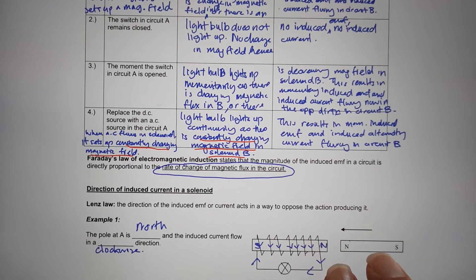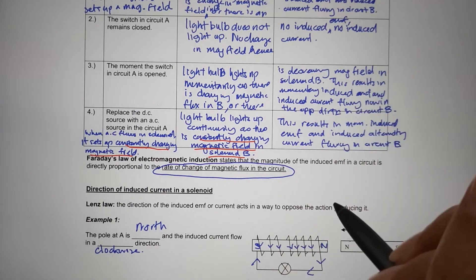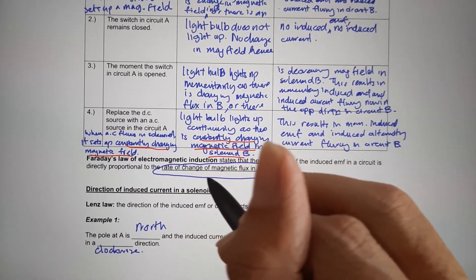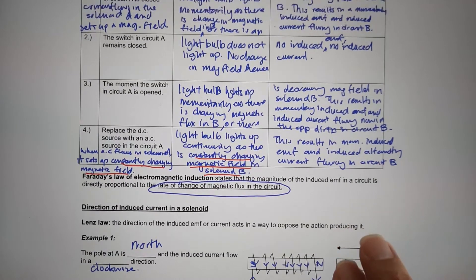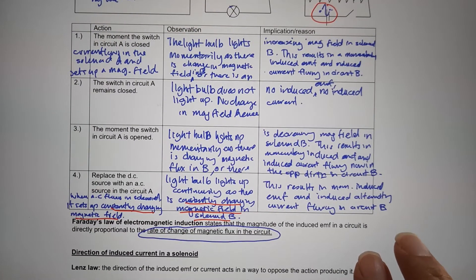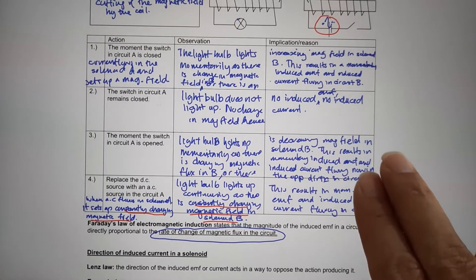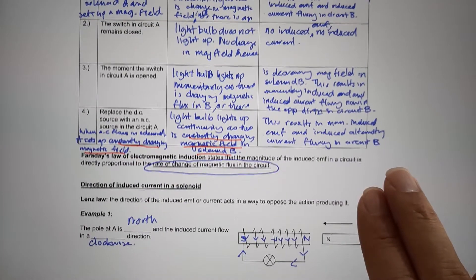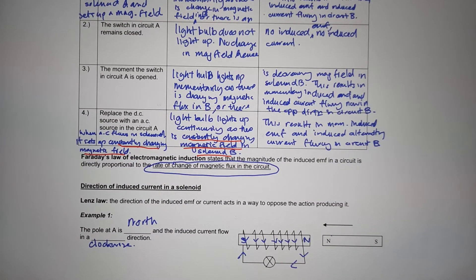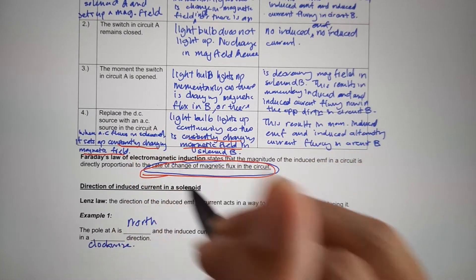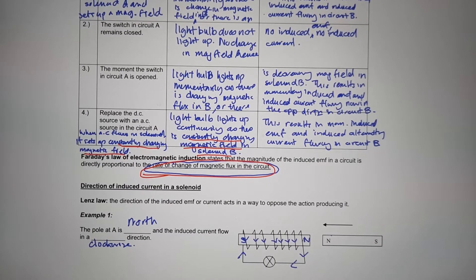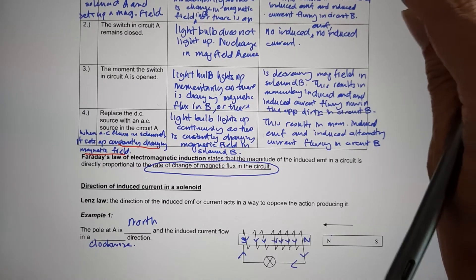Next is Faraday's Law of Electromagnetic Induction. It states that the rate of change of magnetic flux in the circuit is proportional to the magnitude of the induced EMF. So if the magnet moves towards a coil at a greater speed, you will see a greater induced EMF. Why? Because there is a greater rate of change of magnetic flux. That is a very useful term to use when describing these situations.